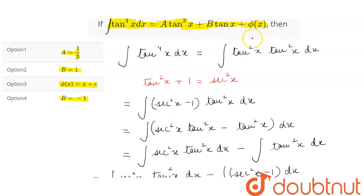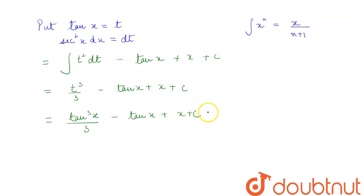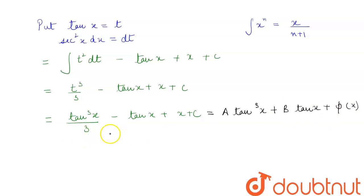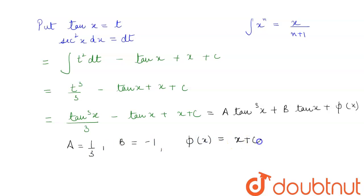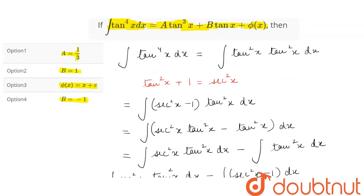Comparing with the given expression a tan cube x plus b tan x plus phi(x), we get the value of a equal to 1 by 3, b equal to minus 1, and phi(x) equal to x plus c. Looking at our options, we see that options A, C and D are all correct.